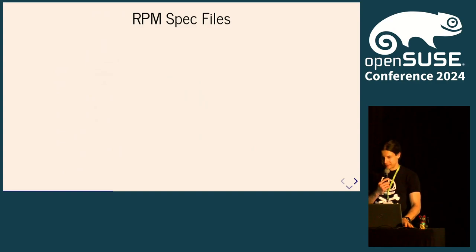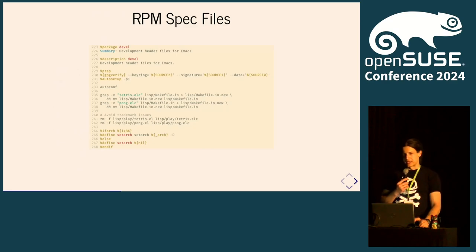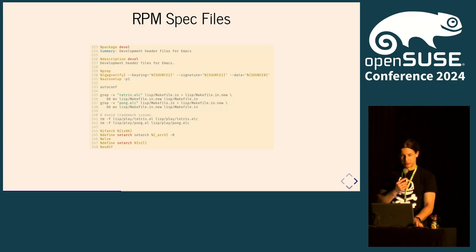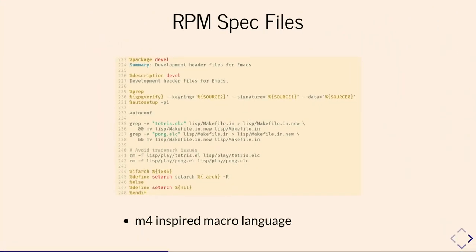RPM spec files. I guess since you're here you maybe know them, maybe love them, probably hate them. This is more or less how a typical RPM spec file looks — not overly complicated but with all these funky macros. Unfortunately, RPM spec files are more or less just a build description. The macro language is something custom; it's sort of kind of inspired by M4, but it's not M4, which is a bummer because you can't use M4 to parse it.